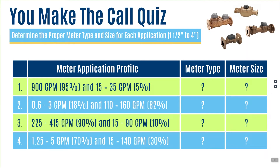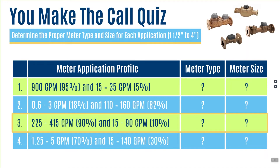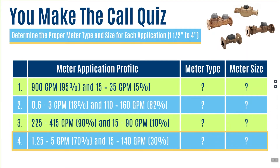Here are the four applications. Application one: a meter that runs 95% of the time at about 900 gallons per minute, and 5% of the time between 5 and 35 gallons per minute. Application two: a meter that goes between 0.6 and 3 gallons per minute 18% of the time, and between 110 and 160 gallons per minute 82% of the time. Application three: a meter running between 225 and 415 GPM 90% of the time, and between 15 and 90 GPM 10% of the time. Application four: running from 1.25 to 5 gallons per minute 70% of the time, and between 15 and 140 gallons per minute 30% of the time.